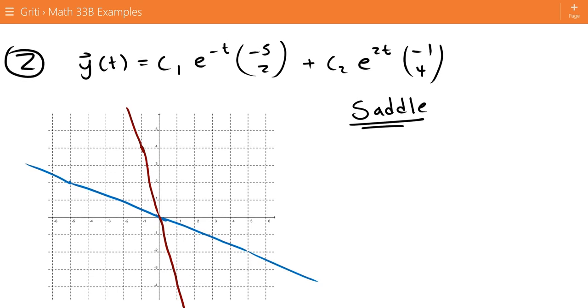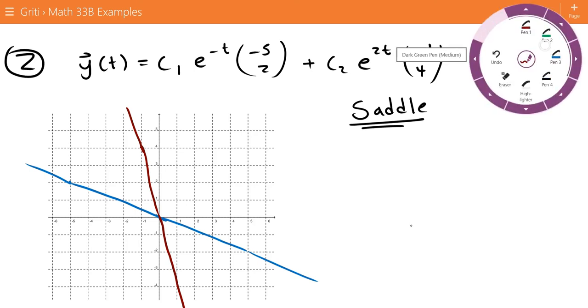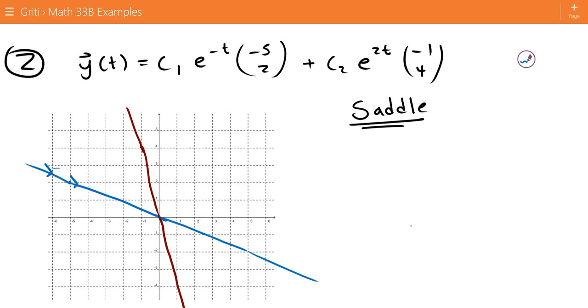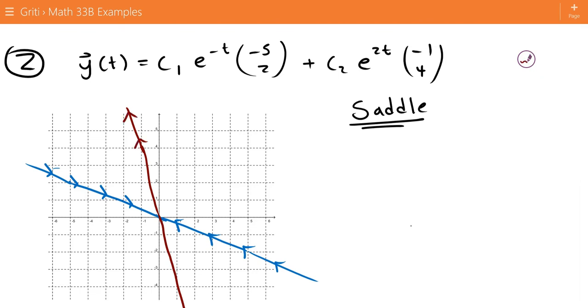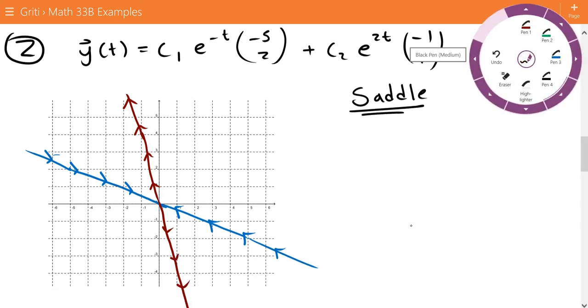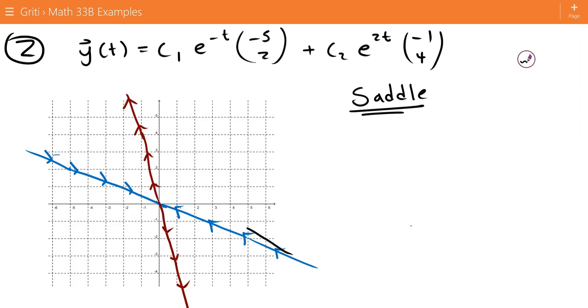And we know that along the negative eigenvalue's eigenvector, we'll be moving in towards the equilibrium point, so in towards the center. And along the positive eigenvalue, along the corresponding eigenvector, we'll be moving out towards infinity, away from equilibrium. And then the solutions in each region will start at v1 and go to v2 as time goes on.